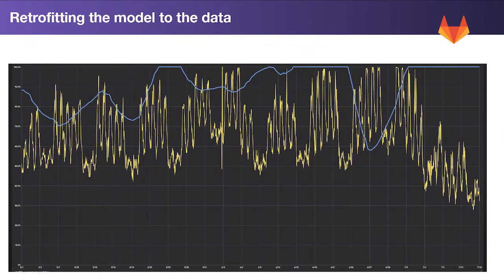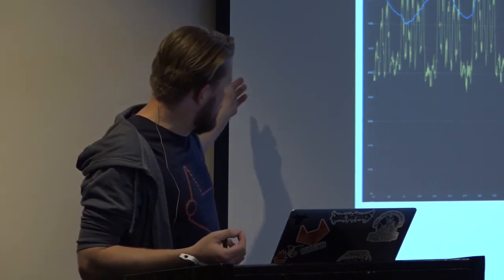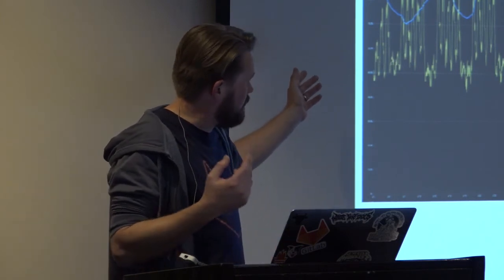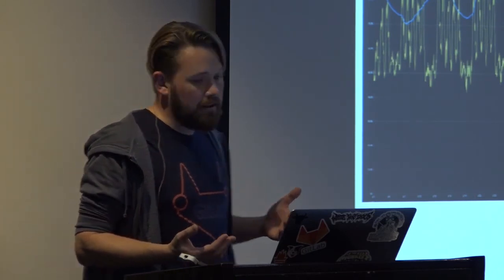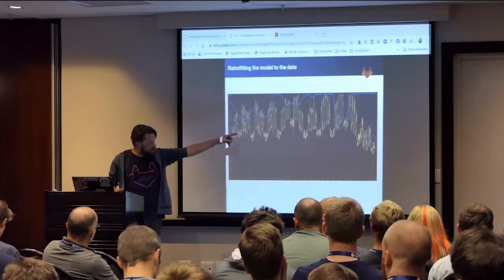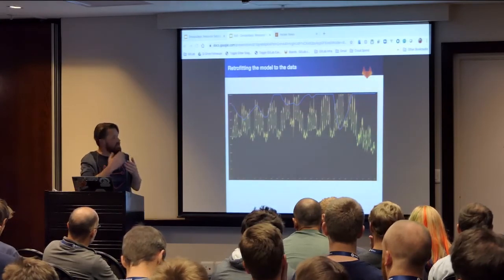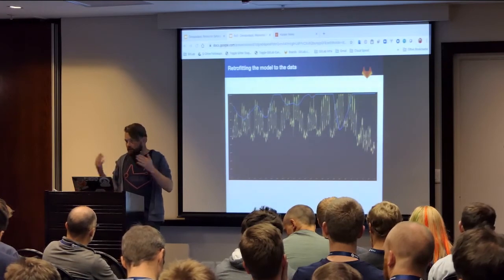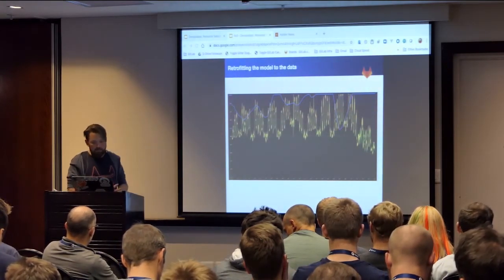Going back to the original incident from July with the Redis CPU, we can retrofit our model to that data and see how it would perform and whether it would have given us the right signals. The yellow line is the Redis CPU saturation, and the blue line is the signal from our prediction algorithm — what it thinks the worst case of Redis is going to be. It actually performs pretty well: it starts off low, goes high, and at that point we could have started making plans to avoid the situation. There is a weird drop, but this is a signal and we get a bunch of these signals and can look at them to decide which ones are important.